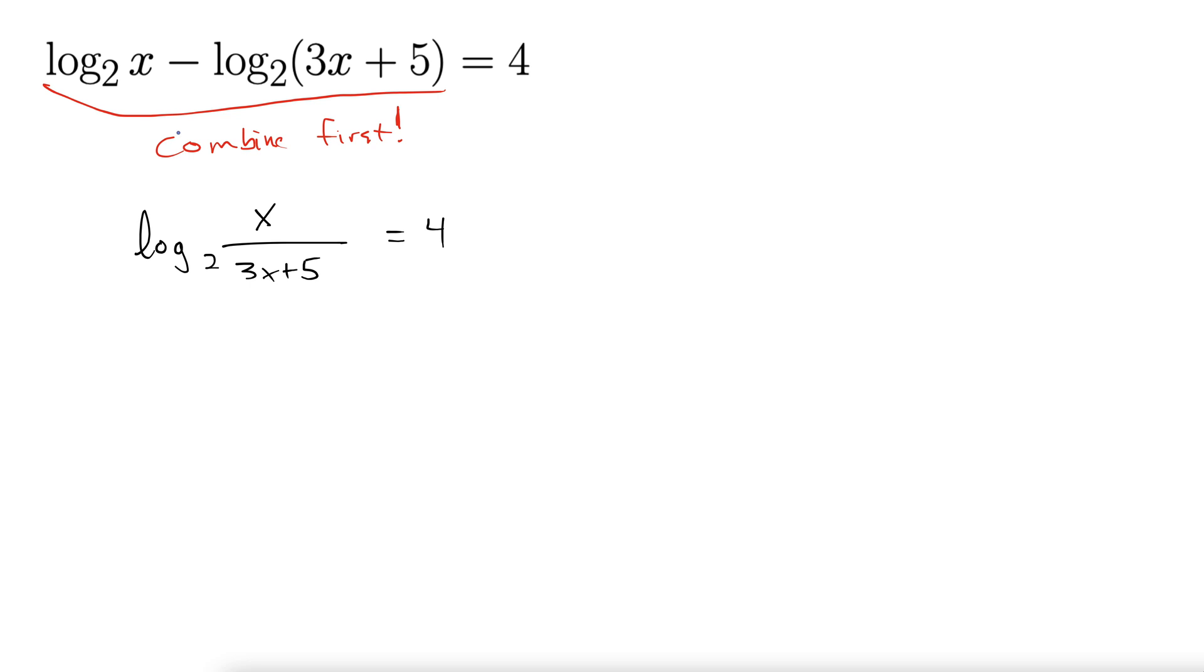Now we convert to exponential form. Once you have a single log over here, you convert to exponential form. So we go 2 to the power of 4 back inside for the equals. It always works that way. You go around like that. It kind of makes a nice circle. So 2 to the power of 4 equals x over 3x plus 5. 2 to the power of 4 is 16 equals x over 3x plus 5.